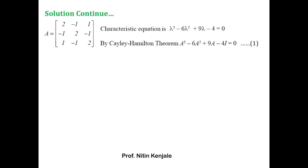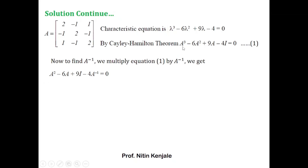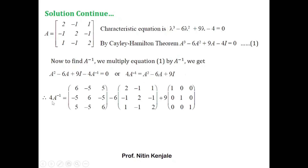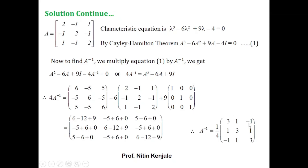We multiply both sides of equation (1) by A⁻¹ to get A² − 6A + 9I − 4A⁻¹ = 0. Taking the 4A⁻¹ term to the other side: 4A⁻¹ = A² − 6A + 9I. We already calculated A², so we substitute A², A, and the identity matrix and simplify this expression to get 4A⁻¹, then divide by 4 to obtain A⁻¹.